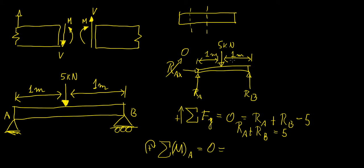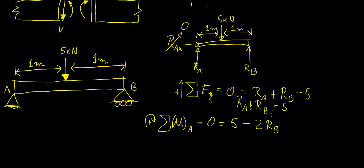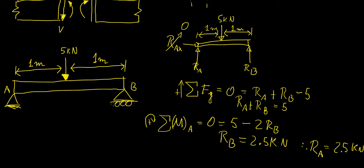Taking the sum of moments about point A: 5 × 1 (clockwise) − 2 × Rb = 0, which gives Rb = 2.5 kN, and therefore Ra = 2.5 kN. We could have inferred that from the symmetry of the problem — the beam is loaded symmetrically with the force acting in the middle — so splitting by two gives the same result, but this is the more rigorous approach.